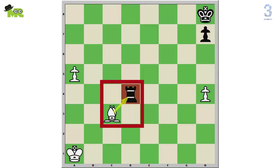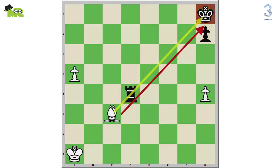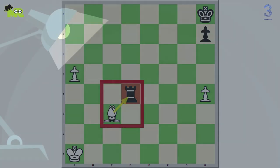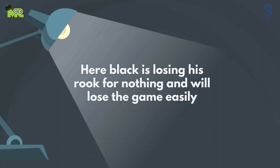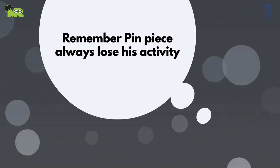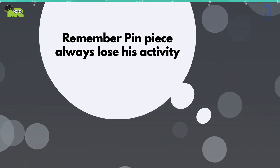Now the d4 black rook cannot move anywhere. Because if the black d4 rook moves, it will be check to the h8 black king by the c3 white bishop. Here black will lose his rook for nothing and lose the game easily. Remember, a pinned piece always loses its activity.